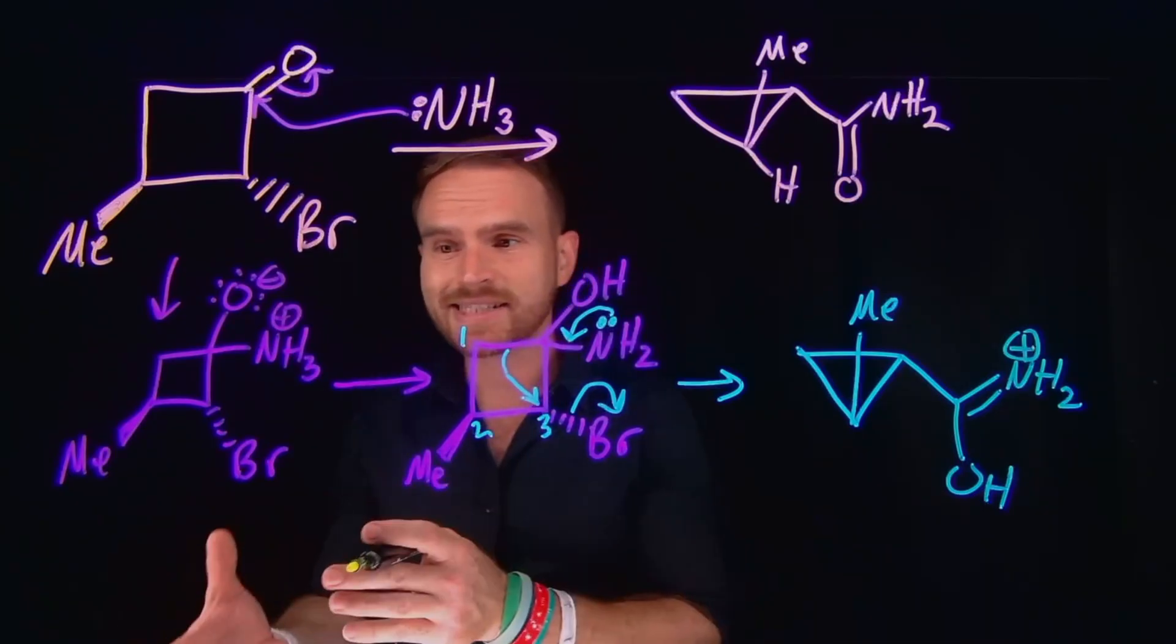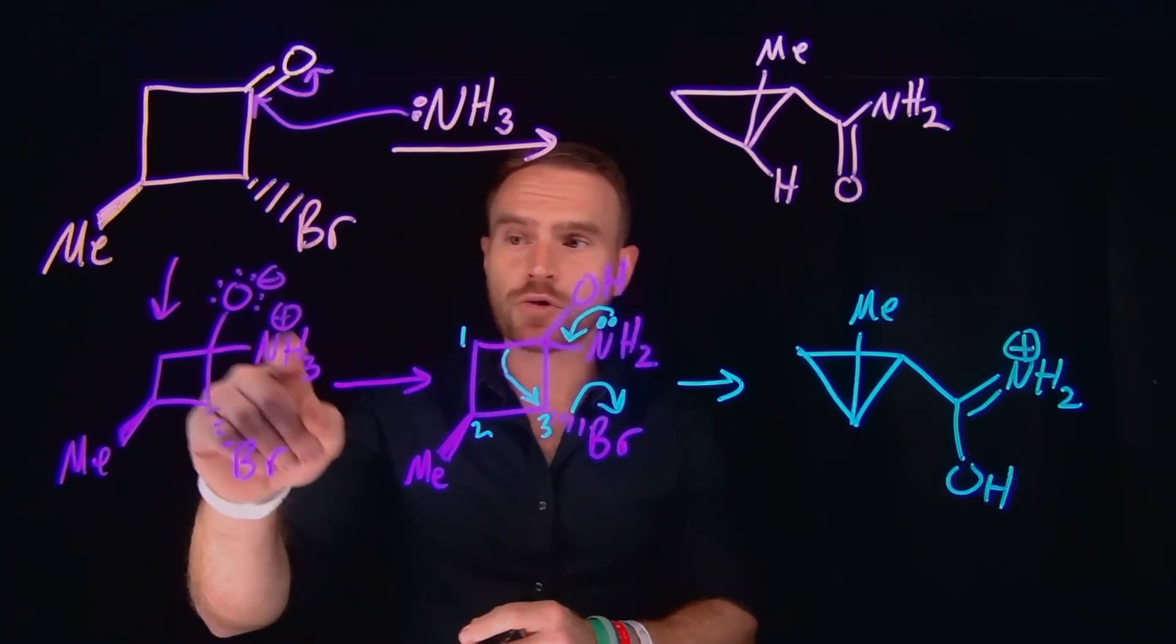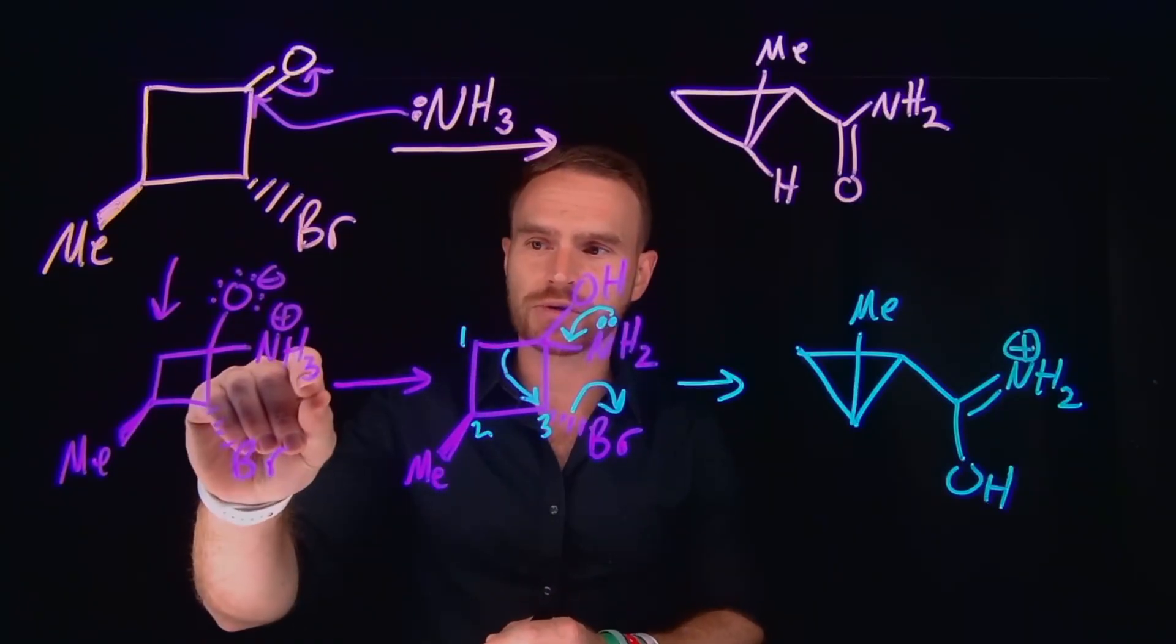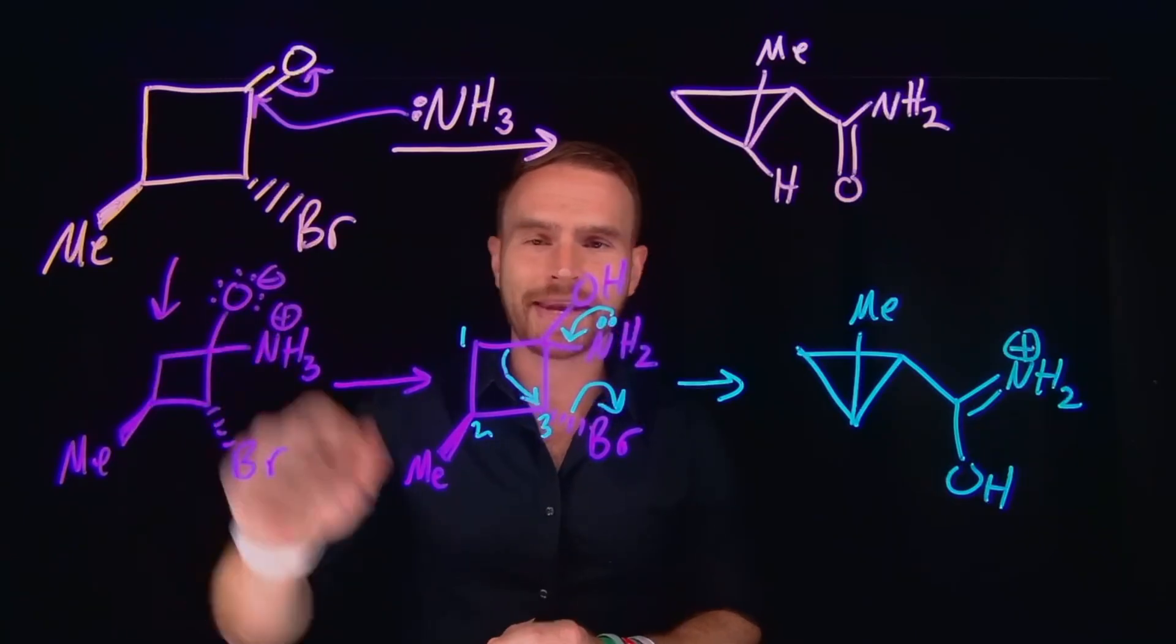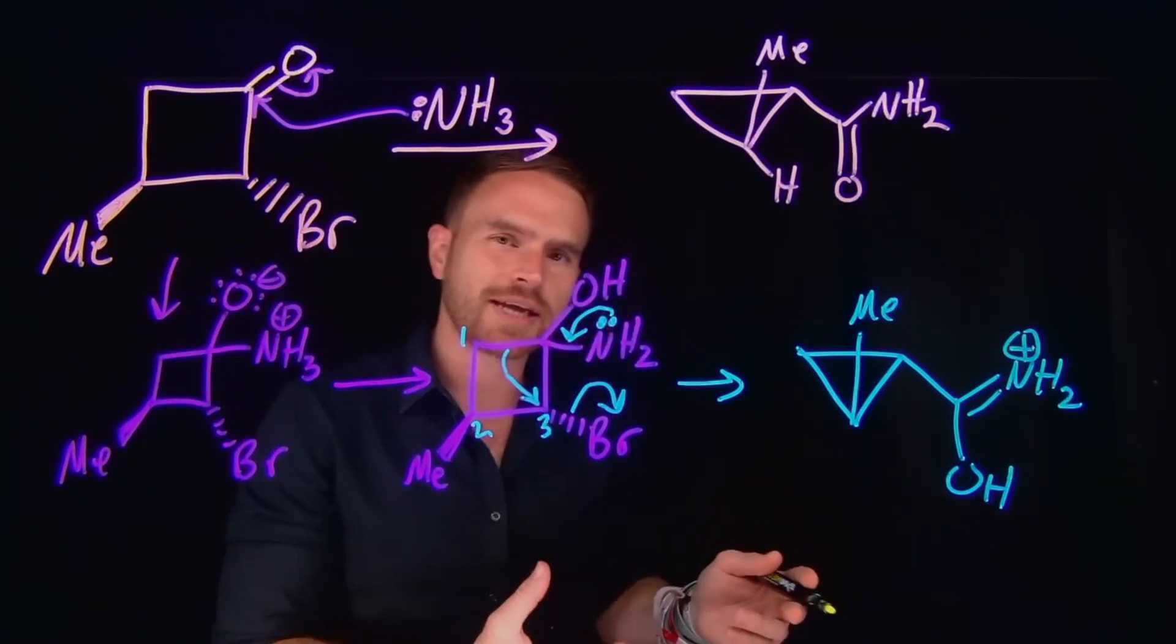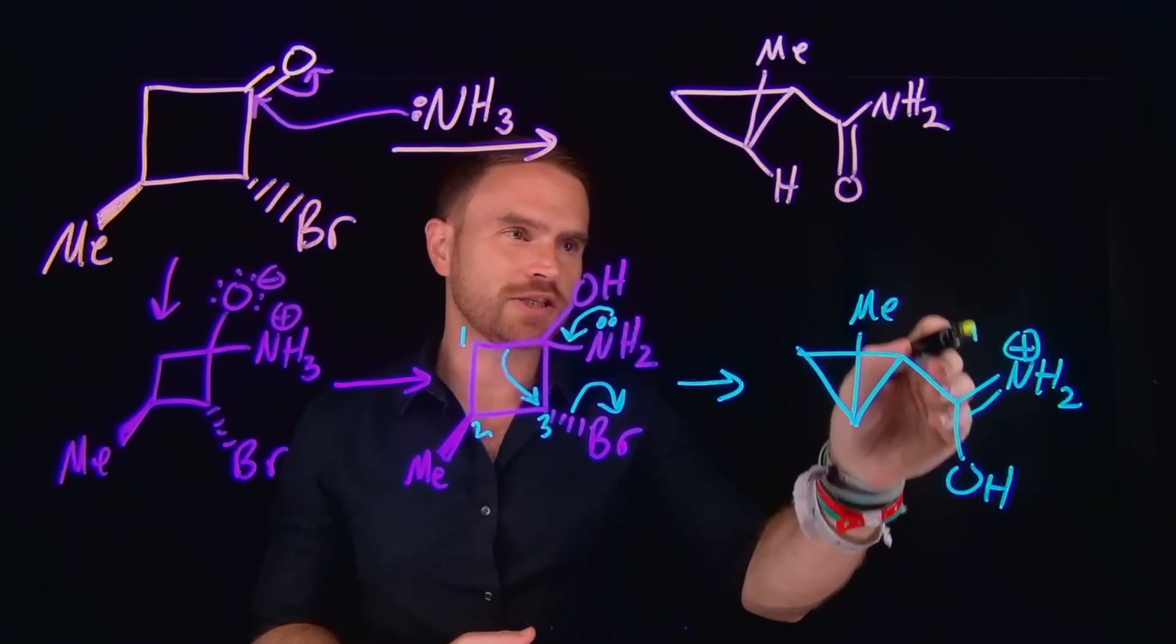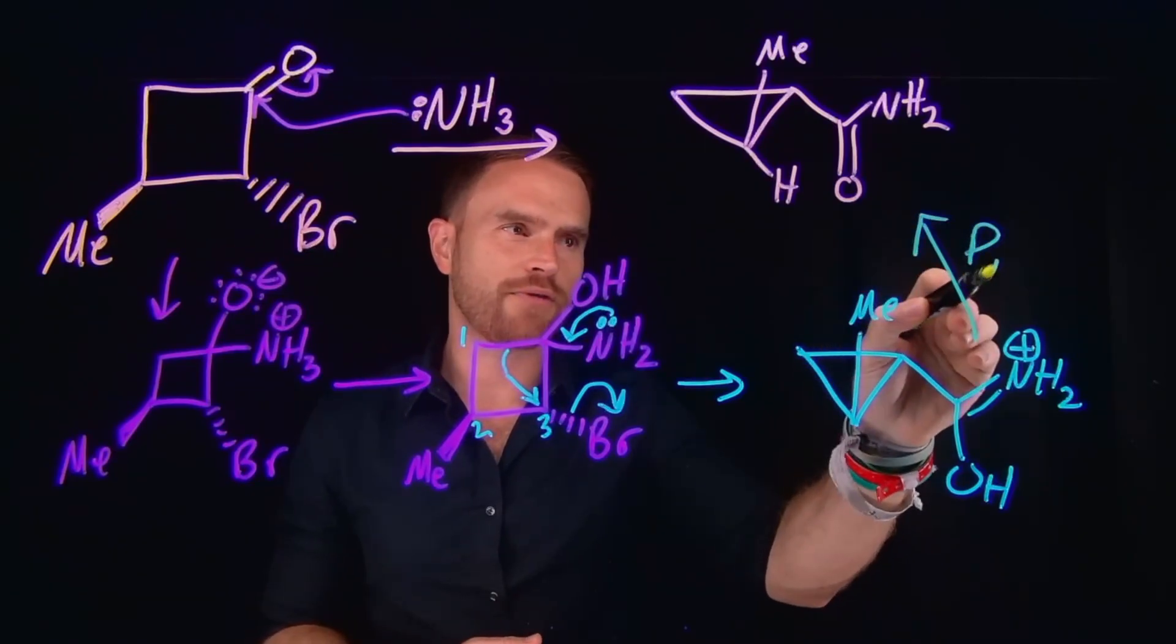And now from here, we do the exact same thing that we did previously, where we did two proton transfers to exchange a proton between the ammonium and the negatively charged oxygen. We'll actually end up doing the same here, where now we can do another subsequent two proton transfers to end up with our final product.